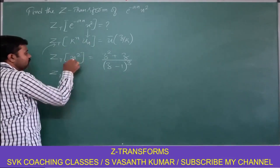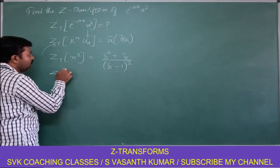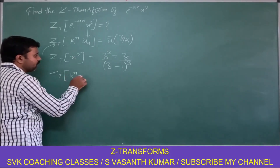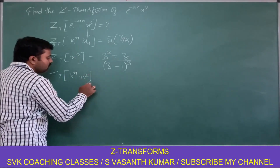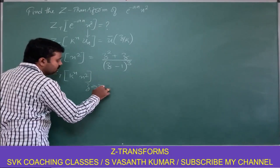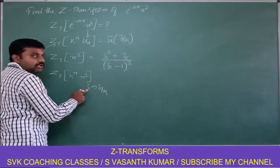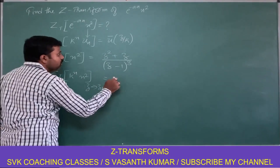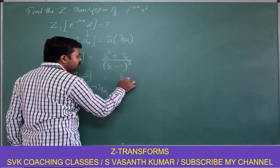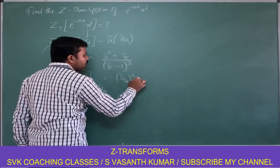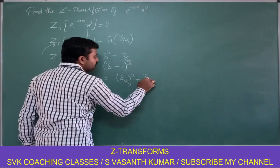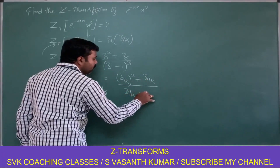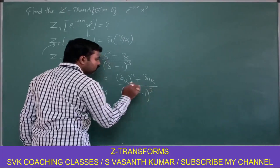Therefore, in place of u(n) I put n square. The Z-transform of k^n · n² is obtained by replacing Z with Z/K in the formula, giving: (Z/K)² + (Z/K), divided by (Z/K − 1)³.